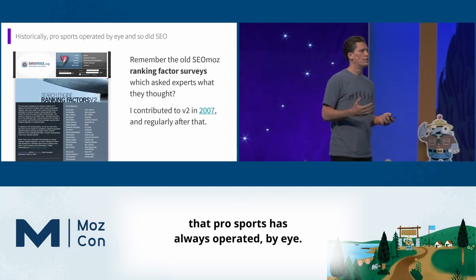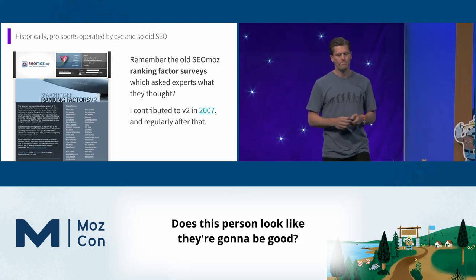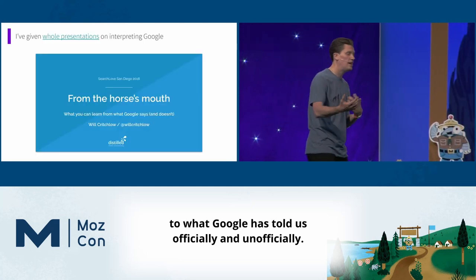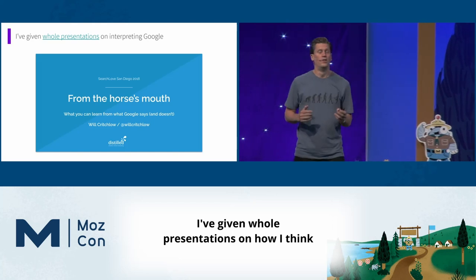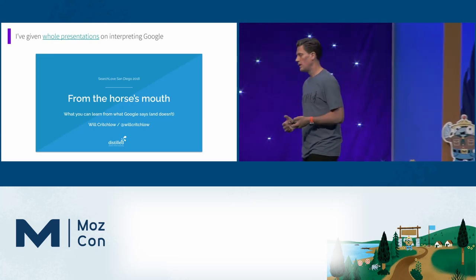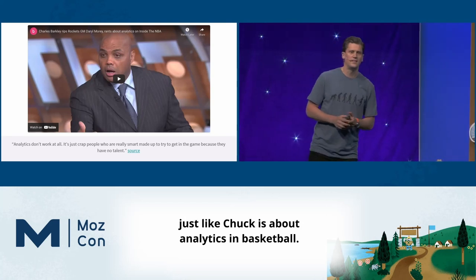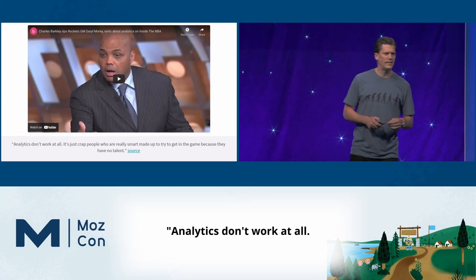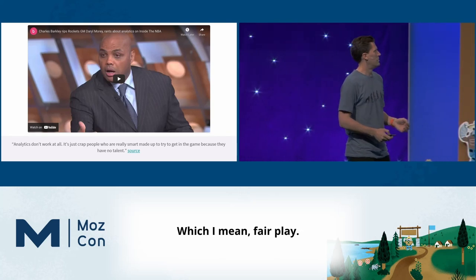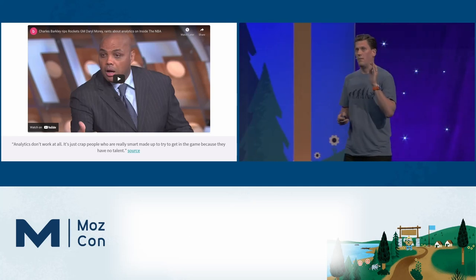This is very similar to the way pro sports always operated by eye — does this person look like a basketball player? We've also tried to pay attention to what Google has told us, officially and unofficially. I'm sure some folks are a little skeptical, just like Chuck is about analytics in basketball. I love his quotes — 'analytics don't work at all, it's just crap that people who are really smart made up to try to get in the game because they have no talent.' Maybe I have no talent.